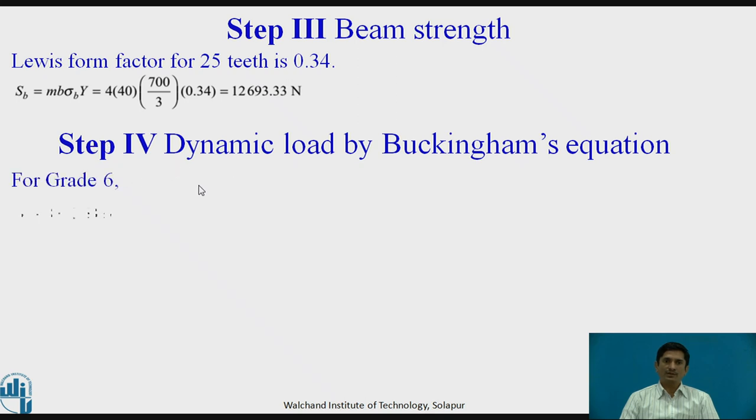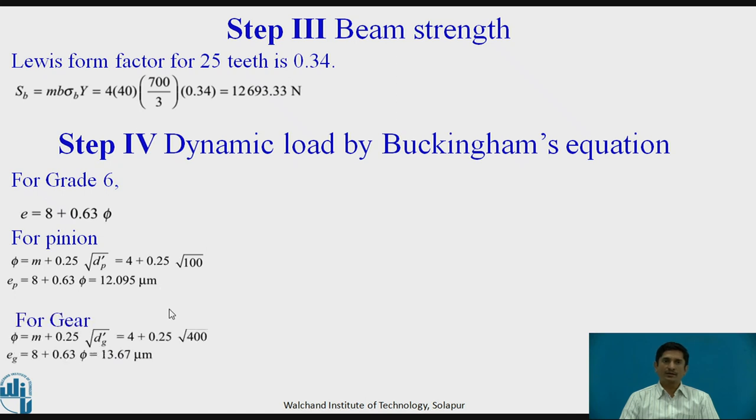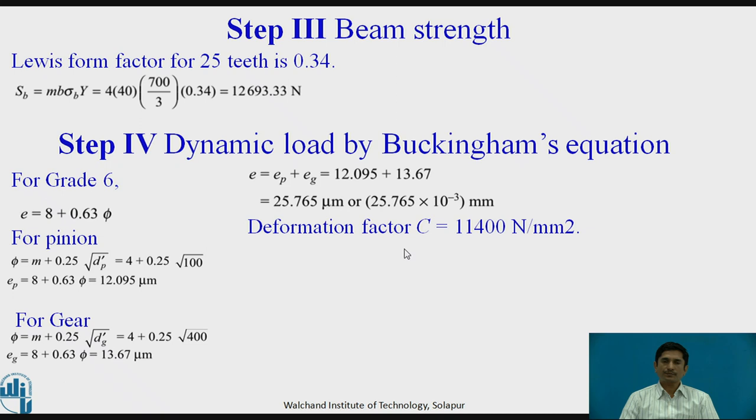The dynamic load using Buckingham's equation. For grade 6, E equals 8 plus 0.635. For pinion, you can get equals 4 plus 0.25 square root of DP dash. That equals 4 plus 0.25 square root of 100. EP equals 8 plus 0.635. We can calculate error for pinion 12.095 micron. For gear, we need to use the same method and calculate error in gear, that equals 13.67 micron. The total error is 25.765 micrometer or micron. We need to convert it into millimeter by multiplying using a factor 10 to the power minus 3.